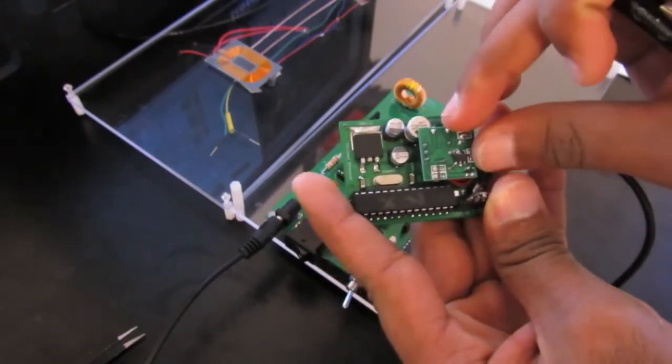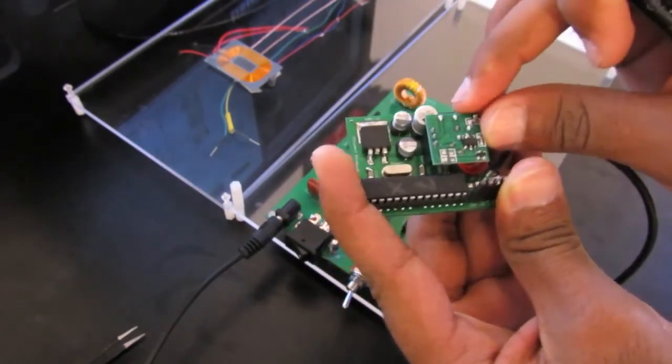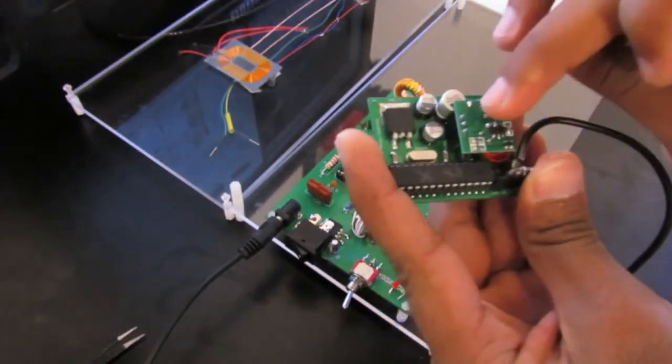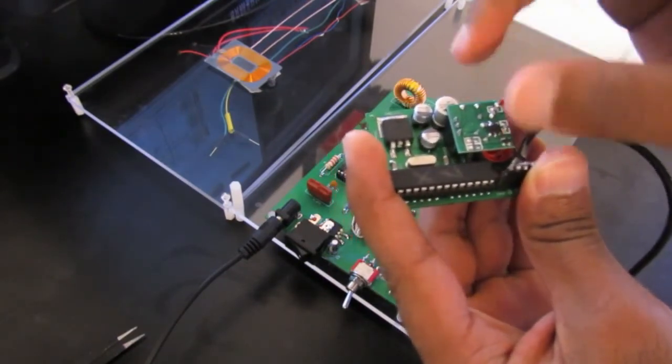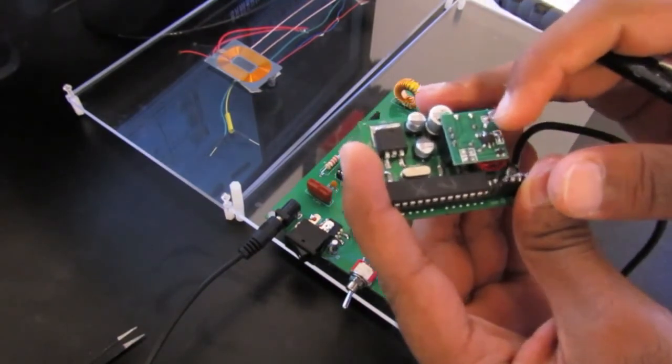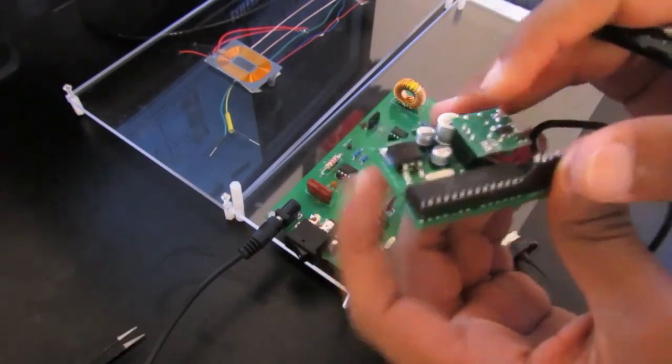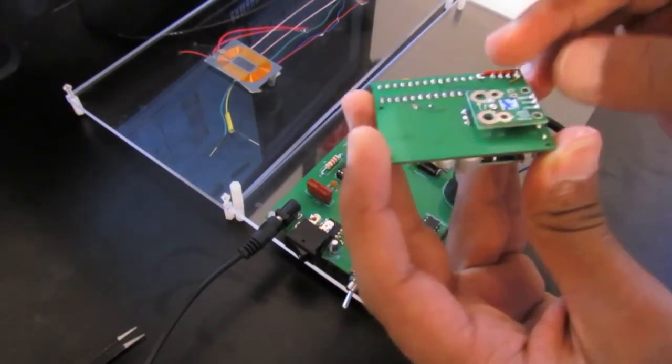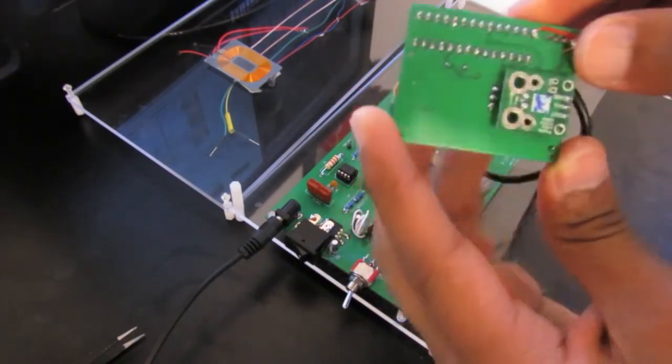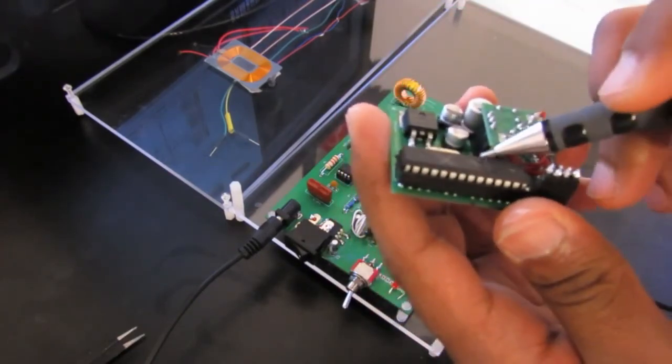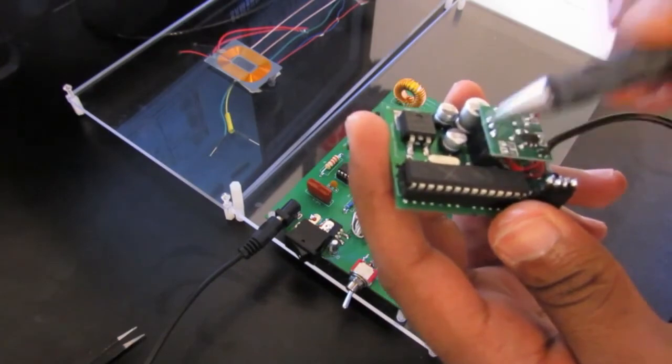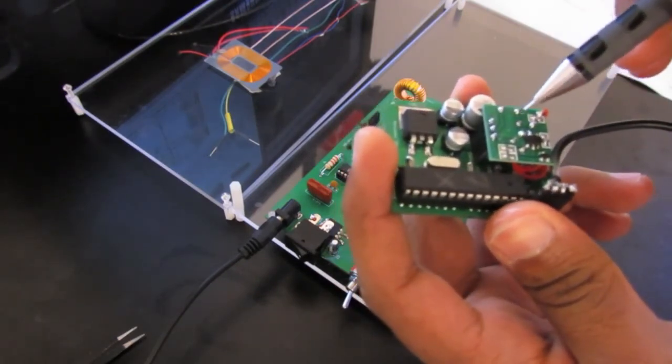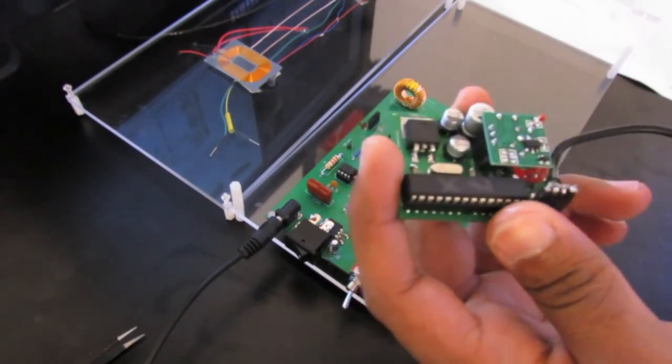Here is the RF transmitter module that will send the charging current data to the receiver module shown before. Here is the charging current sensor. The charging current sensor sends the data to the microcontroller, and the microcontroller transmits that data through the transmitter module to the receiver module.